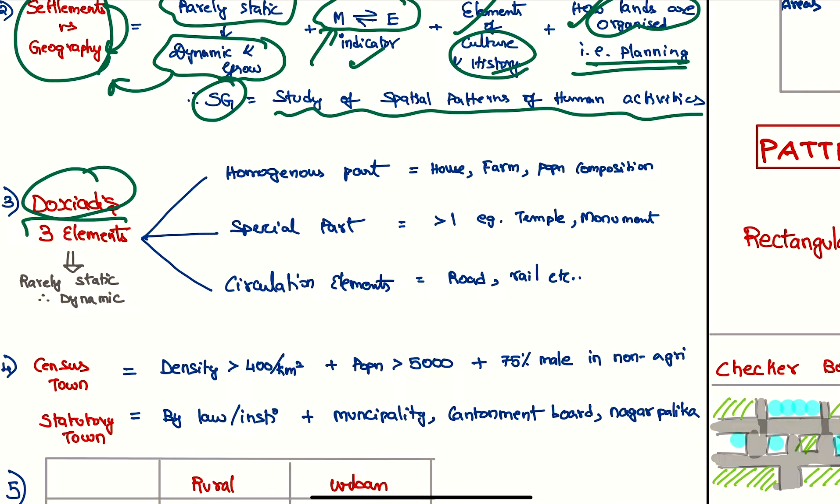Therefore, settlement geography is concerned with the study of spatial patterns of human activities. Now, Doxiadis gave three elements of a settlement: the homogeneous parts like house, farm, or population composition; special parts like a temple or monument; and circulation elements which are transport like road and rail.